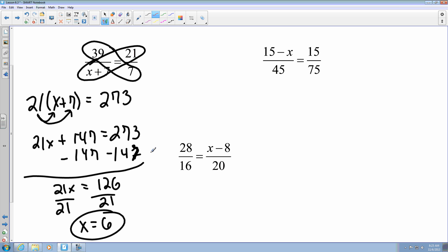Let's take a look at this one. I have 15 minus x over 45 equals 15 over 75. So again, the first thing I'm going to do is I'm going to multiply these two values. So I've got 75, I'm going to multiply by 15 minus x. And then it's going to equal 45 times 15, which gives me 675.